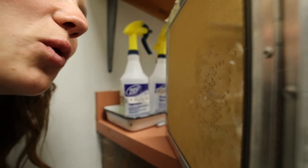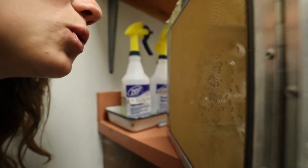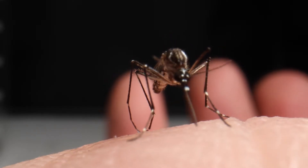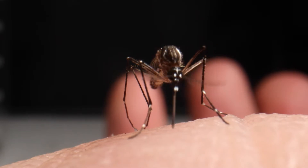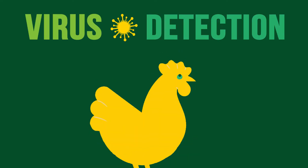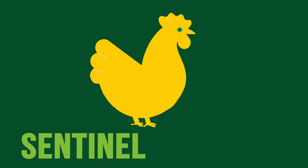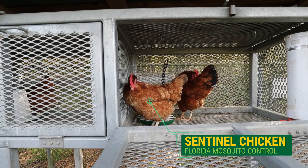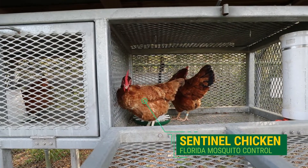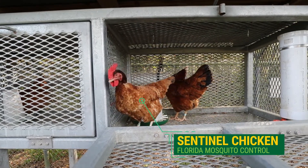The reason understanding mosquito biology is important is because it relates to disease. As it turns out, Florida has an ingenious way to look for diseases — sentinel chickens. We are on the way to see one of the weirdest things. The sentinel chicken program helps us know when there are diseases in the area, even before anybody gets them.